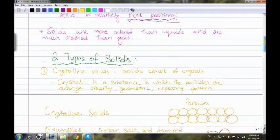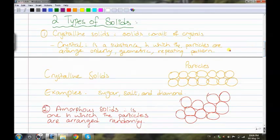We have two types of solids. The first type is crystalline solids. Crystalline solids are solids that consist of crystals. A crystal is a substance in which the particles are arranged orderly, geometrically, and in a repeating pattern. As you can see here, we have a diagram of the particles in crystalline solids.